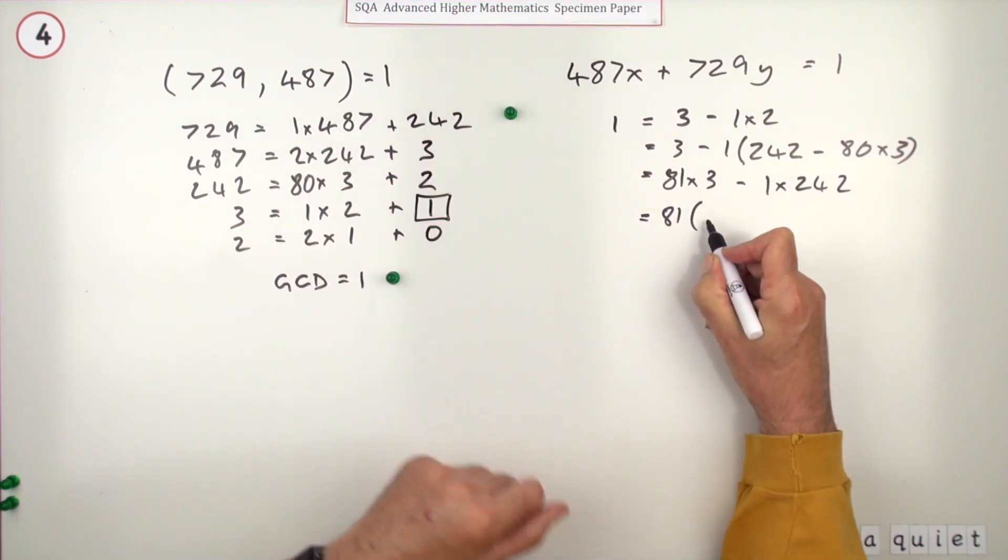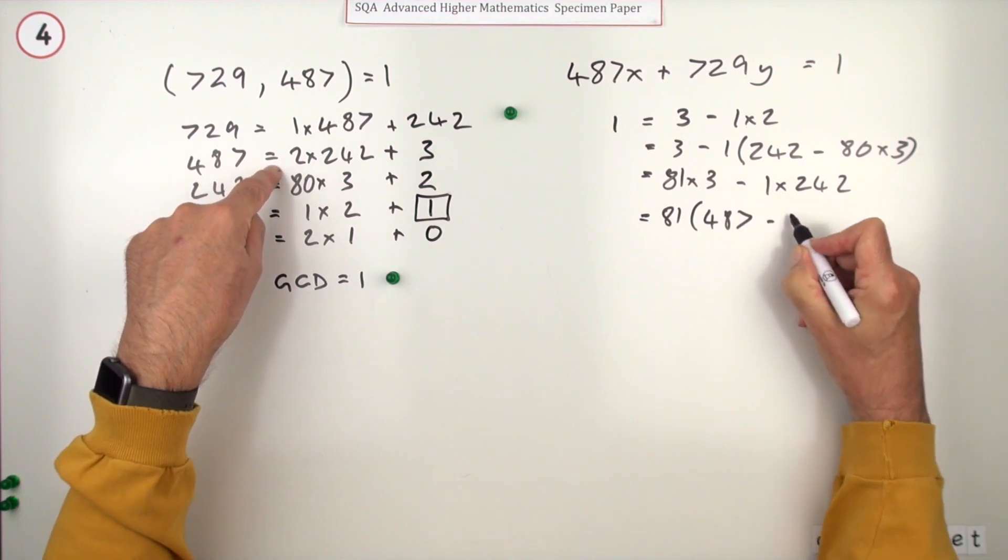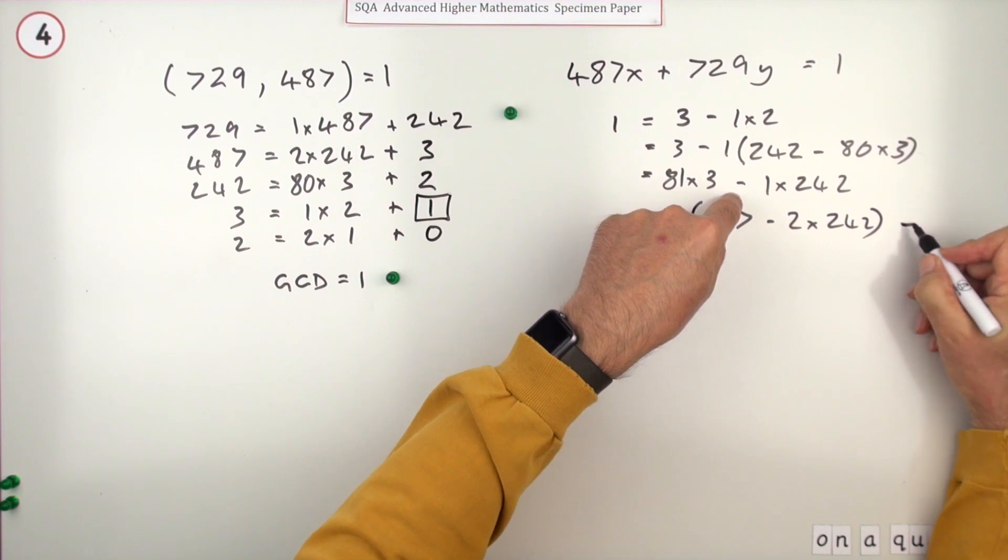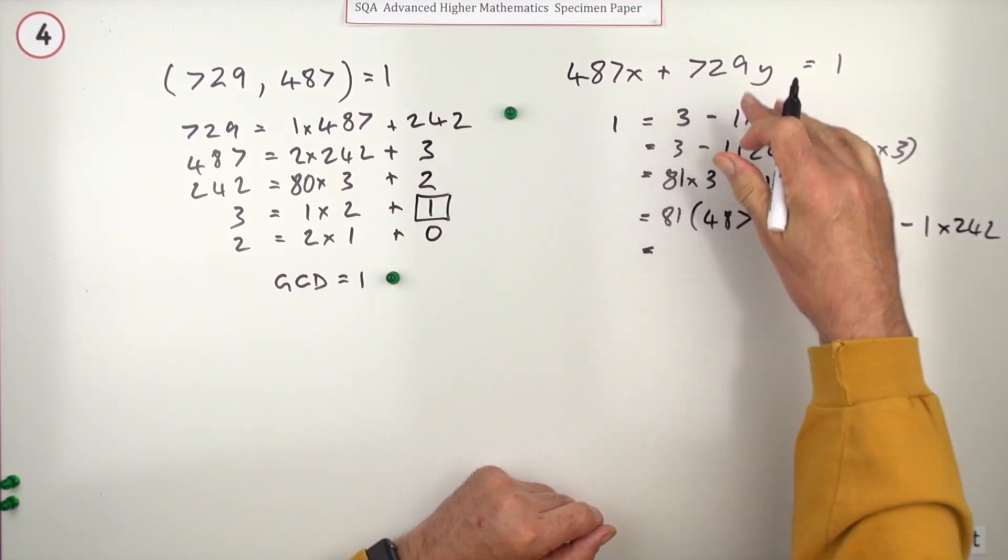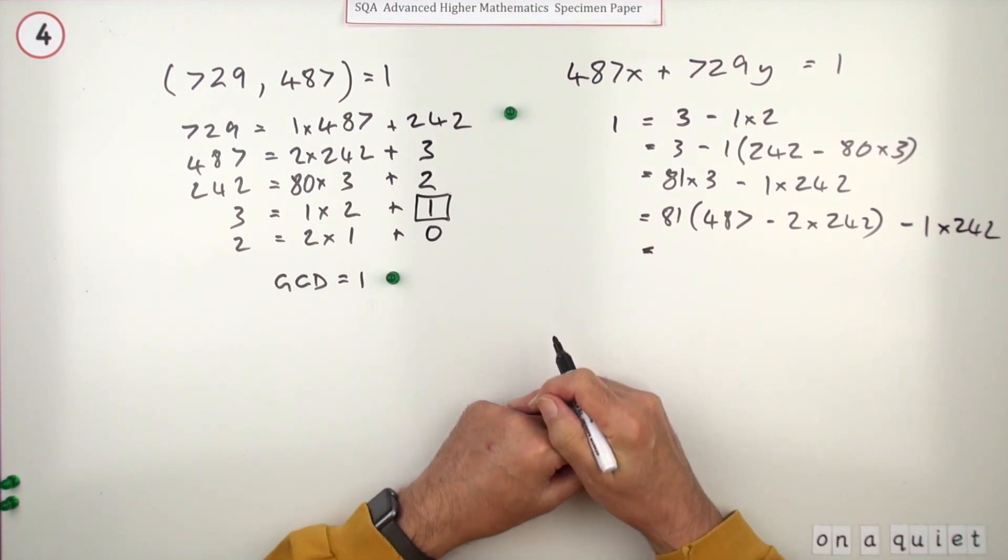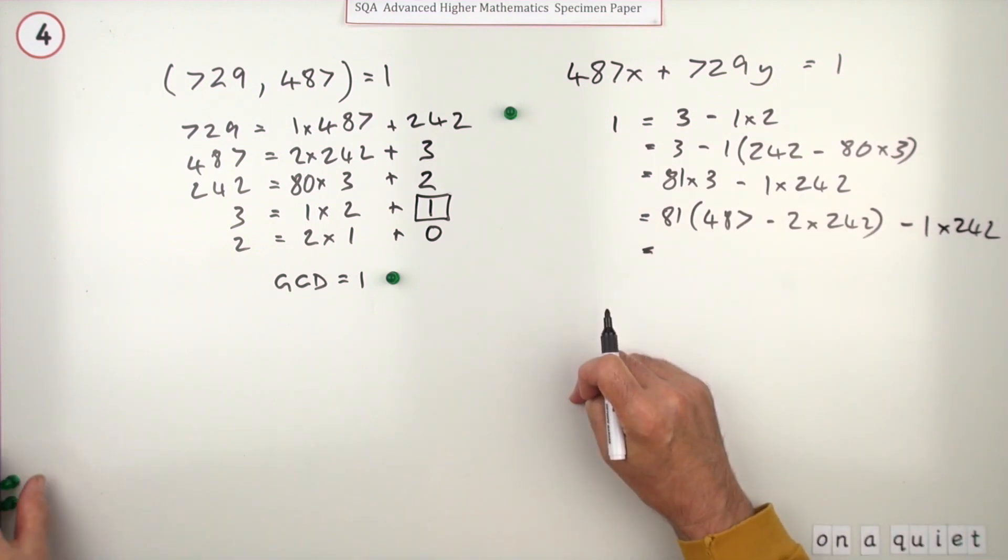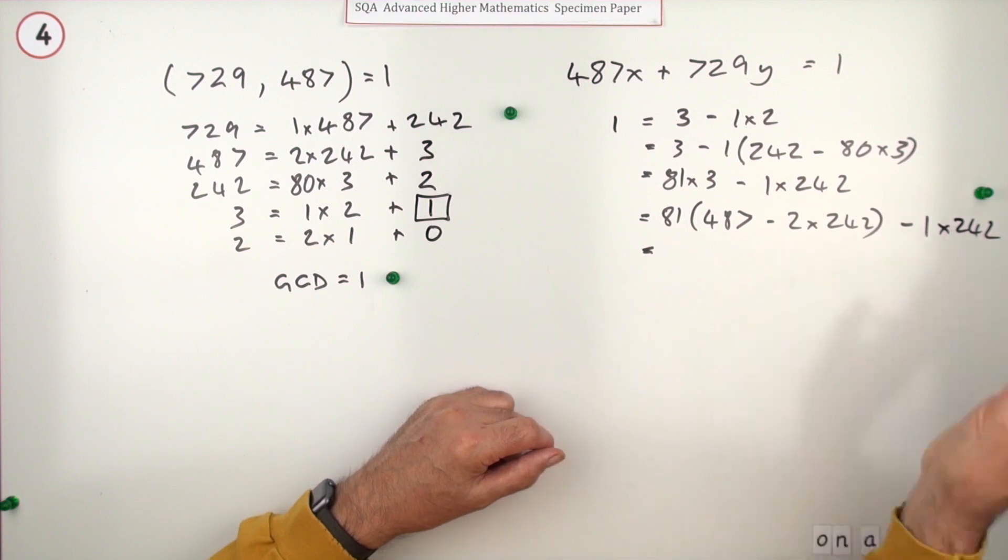Now you step up to the 3. I've got 81 lots of - what's the 3 equal to? 487 minus 2 lots of 242, minus the second part. The one lot you had of 242 - quite tedious, but at this point once you've gone through that step back twice, you get a mark, more or less, because there's two marks for this side.